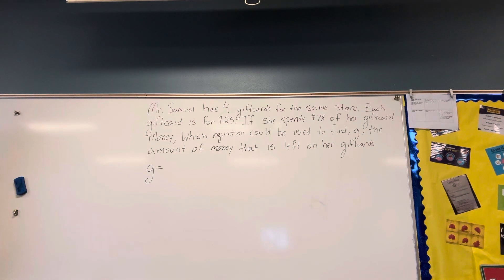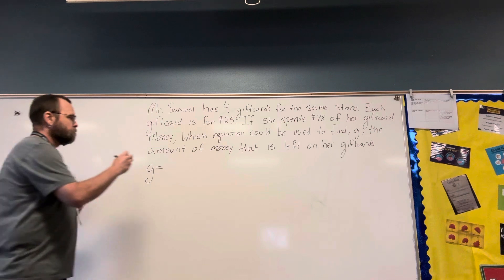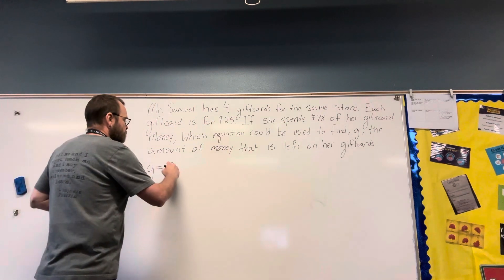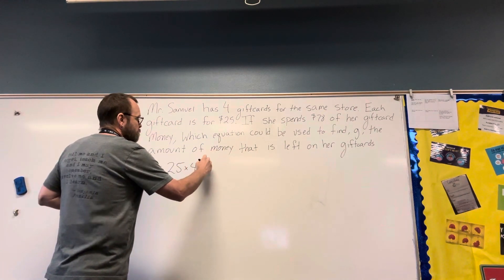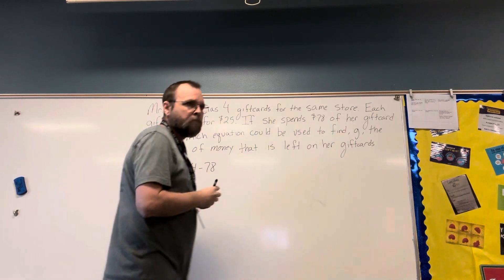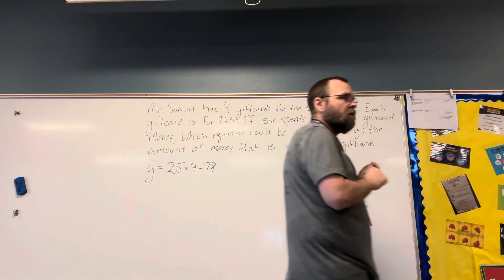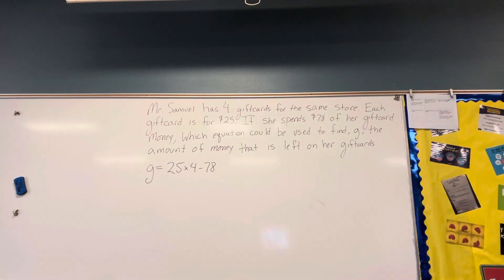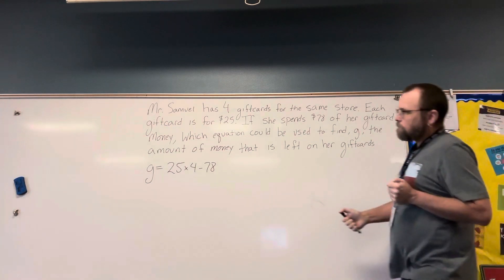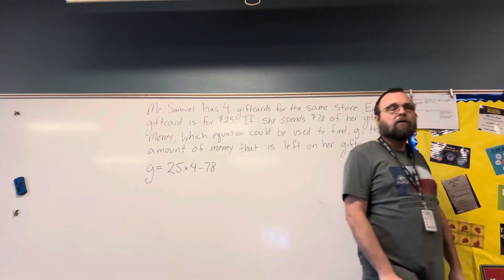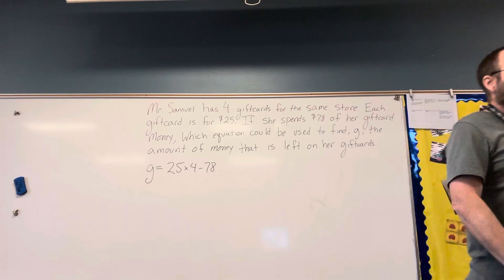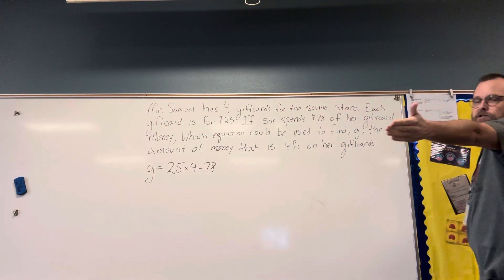You're going to have to do 25 times 4, and then when you get the total of that, you do that number minus 78. So there would be our equation — it's an equation because it's got an equal sign. That would be an equation.